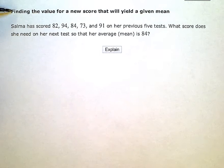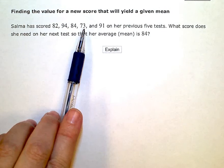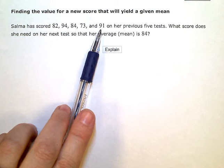Finding the value for a new score that will yield a given mean. Salma has scored 82, 94, 84, 73, and 91 on her previous five tests.